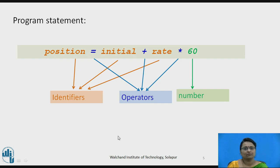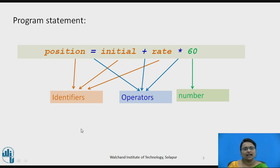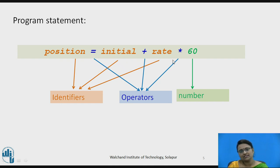Consider a simple program statement: position equals initial plus rate multiplied by 60. In this statement, position, initial, and rate are identifiers. The symbols equals, plus, and multiplication are operators. The number 60 is a numeric value. So we can categorize these elements.